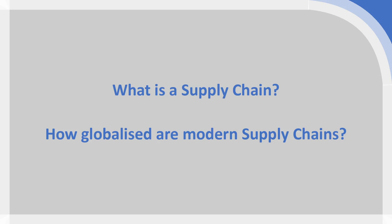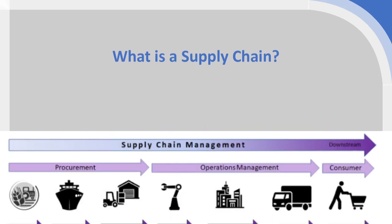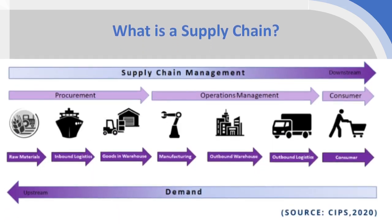So if we start with the question of what a supply chain is, it's both a very complex and a very simple answer. The best way to think about supply chains is that it's the movement and processing of raw materials down usually a chain of different sets of activities until they get to the end consumer.